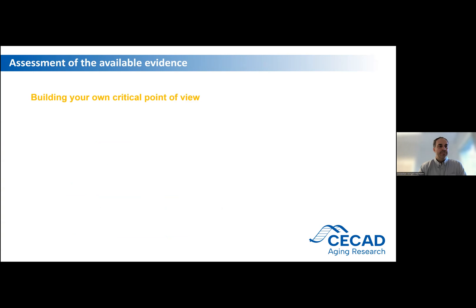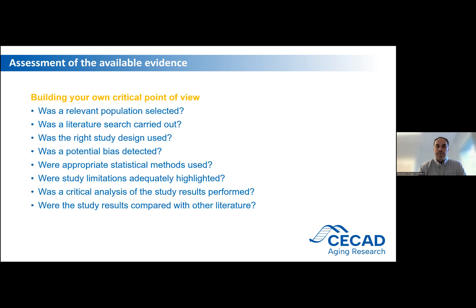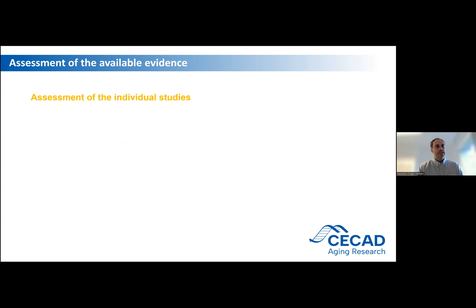For the assessment of the available literature, it is very important to build your own critical point of view, and you can also discuss this with your colleagues. This includes the following questions: Was a relevant patient population selected? Was a literature search carried out? Was the right study design used? Was a potential bias detected? Were appropriate statistical methods used? Were study limitations adequately highlighted? Was a critical analysis of the study results performed? And were the study results compared with other available literature?